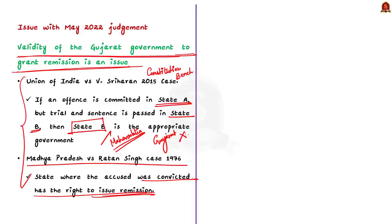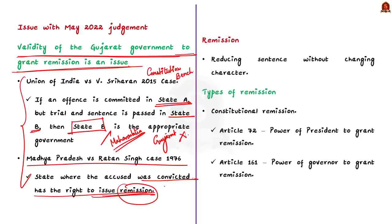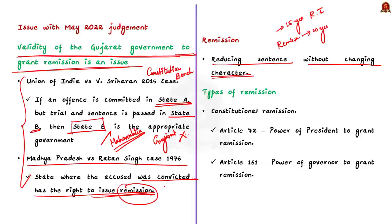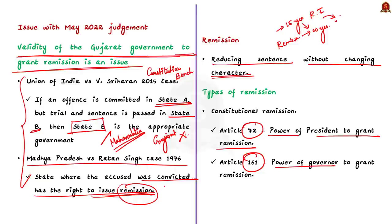Throughout this discussion, remission has been mentioned several times. Remission is shortening of a sentence without changing its character. For example, if a person is sentenced to 15 years rigorous imprisonment, through remission his punishment can be reduced to 10 years of rigorous imprisonment — the nature of punishment is not changed, but the time of sentence is reduced. Article 72 of the Constitution empowers the President to grant remission, and Article 161 gives similar power to the Governor.